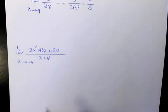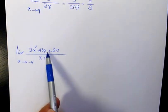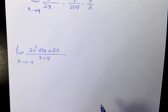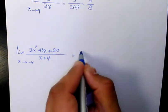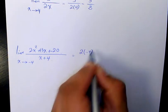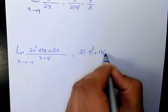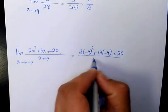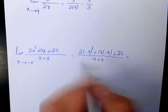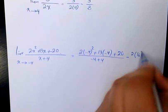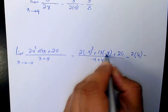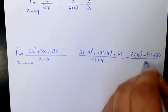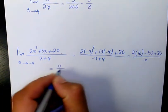We have limit of 2x squared plus 13x plus 20 over x plus 4 when x is approaching negative 4. When you substitute there, you have 2 times negative 4 to the power of 2 plus 13 times negative 4 plus 20 over negative 4 plus 4. That's going to be 2 times 16 minus 52 plus 20 over 0. That's going to be 0 over 0.